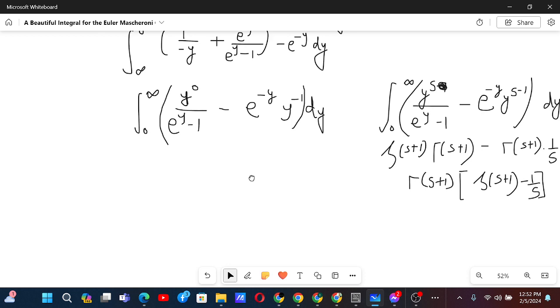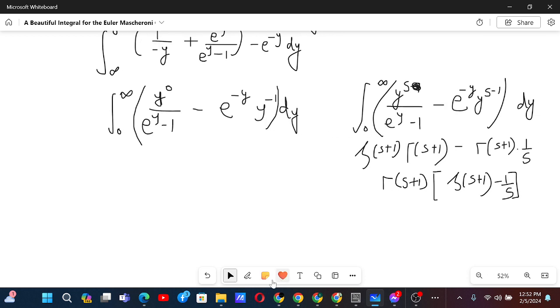So now we will use the same thing over here as well. So basically we have evaluated this limit. Now we will try to find its value at limit as s is tending to 0. Because if we put s equals to 0 in this integral, we will get the exact same integral that we want.